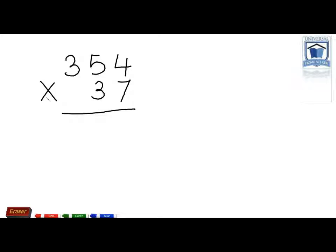We start off by multiplying with the 7. We start off with the 7 times 4. 7 times 4 equals 28. So we put the 8 down below the 7 and we carry the 2.